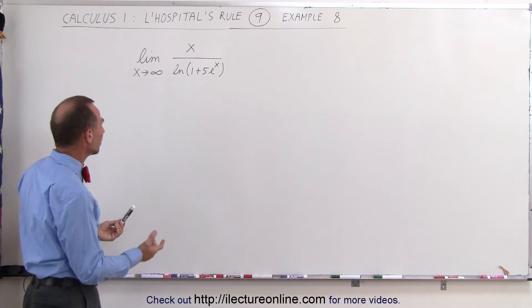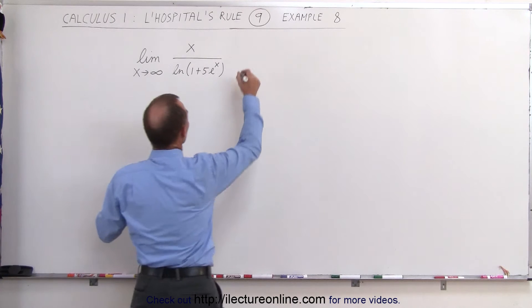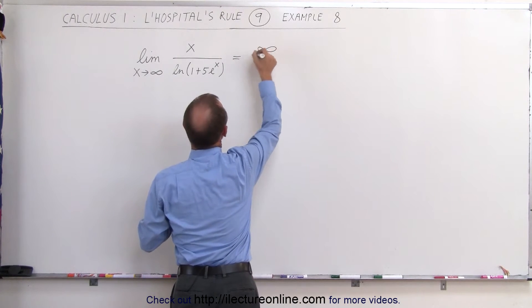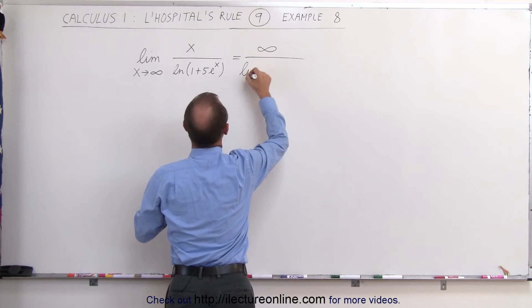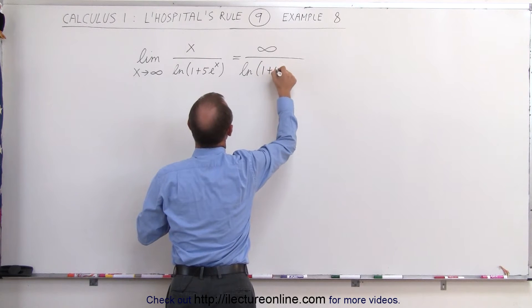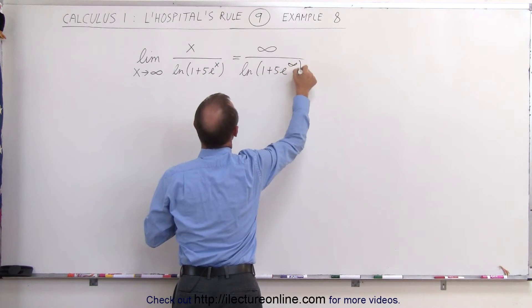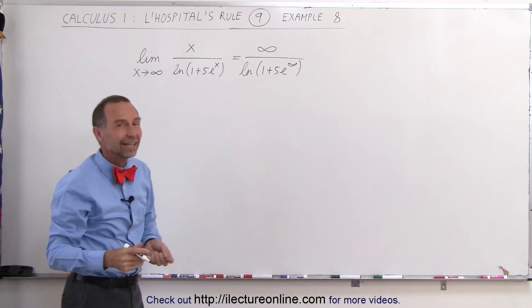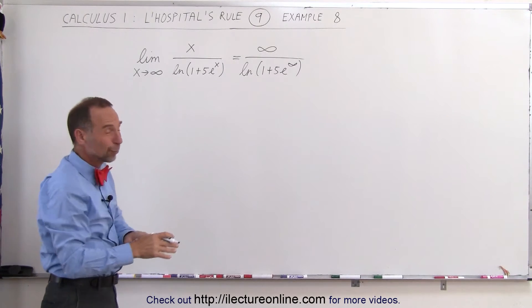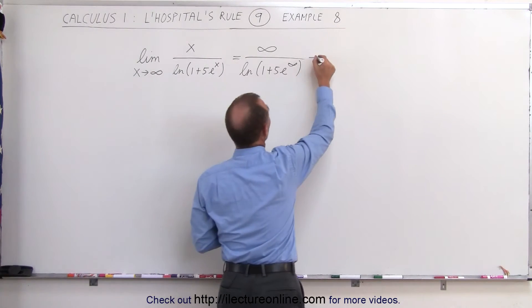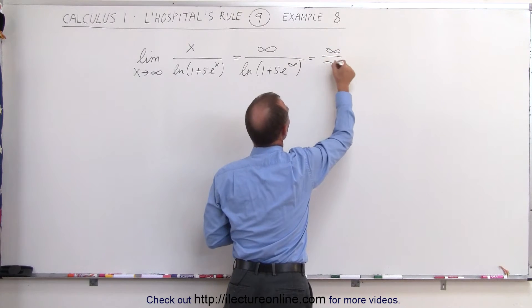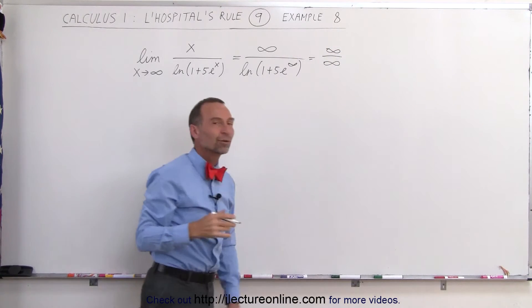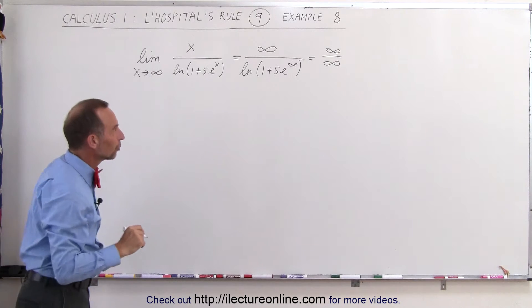Let's try to plug in the limit and see what we get. This becomes infinity divided by the natural log of 1 plus 5e to the infinity power. Now e to the infinity is infinity, even when we take the natural log of that we still get infinity. This becomes infinity divided by infinity, and that's an indeterminate form for which we can use L'Hôpital's rule.